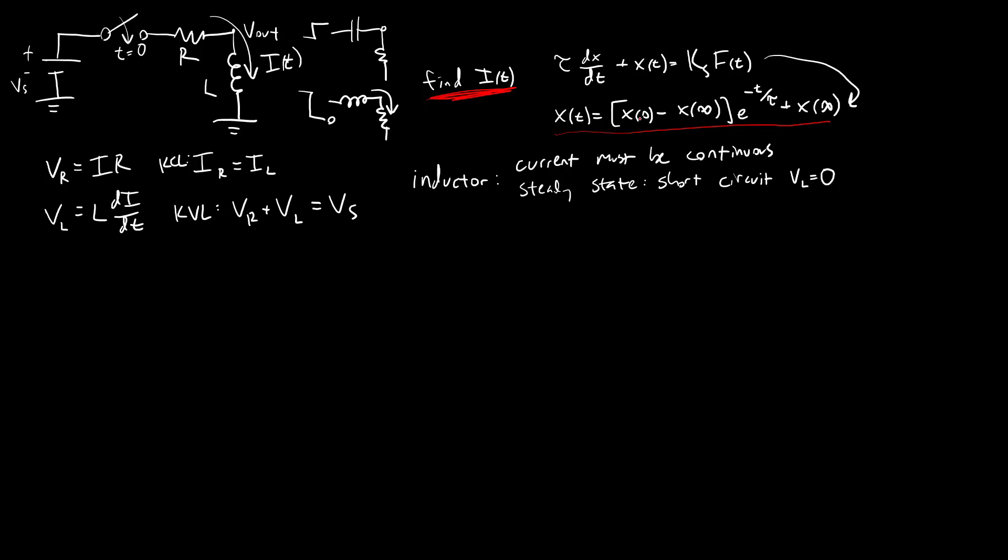To have this equation, we need both the initial condition for the current, the final or steady state condition for the current, and we need tau, the time constant. So that's three different constants we need in this equation to get I as a function of time.